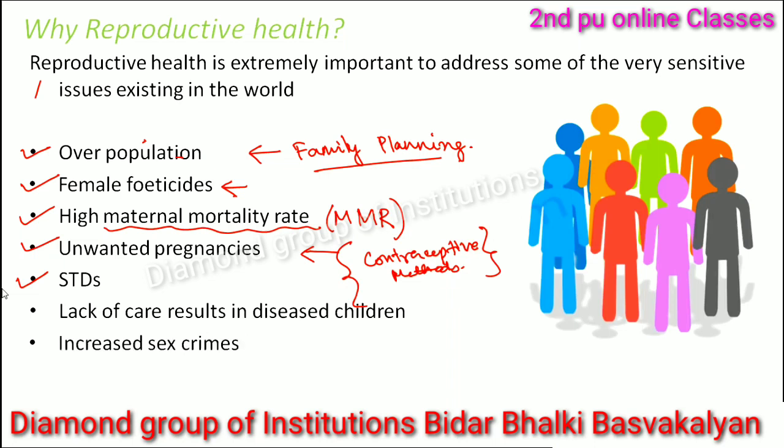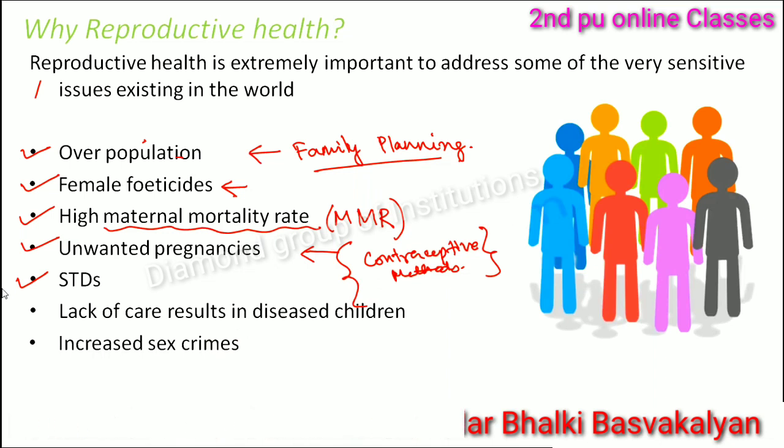Increased sex crimes are another important issue happening throughout the world, and because of that, reproductive health also gets affected. So reproductive health talks about scenarios and approaches that can handle these kinds of issues better.